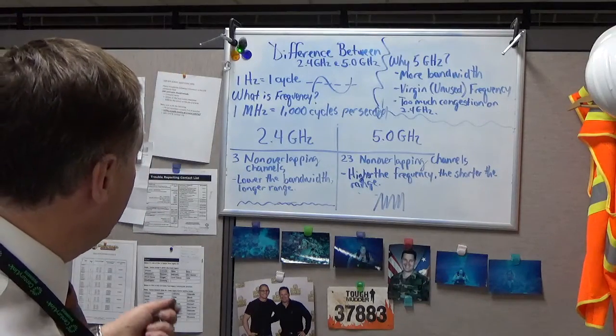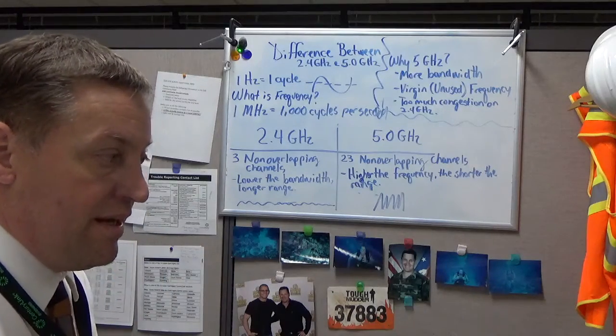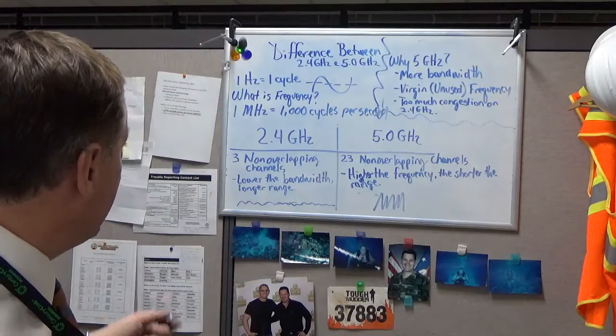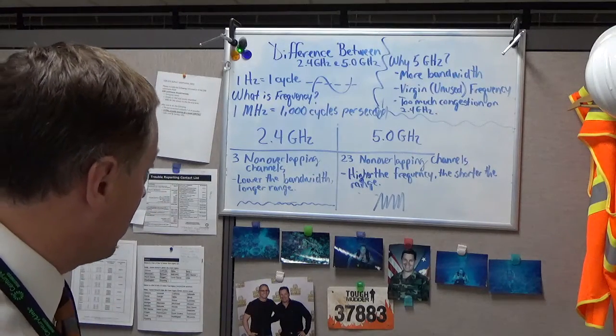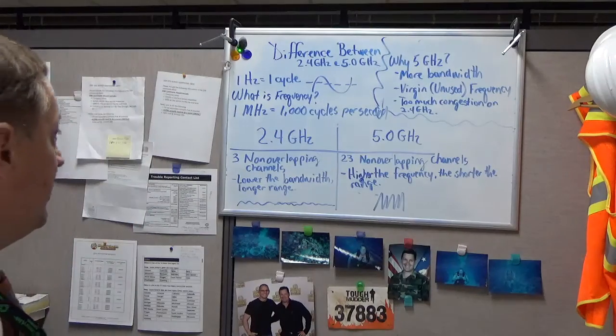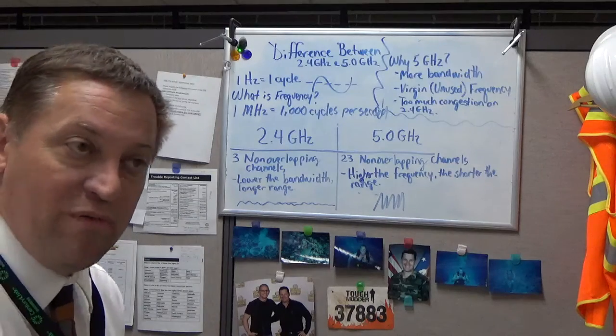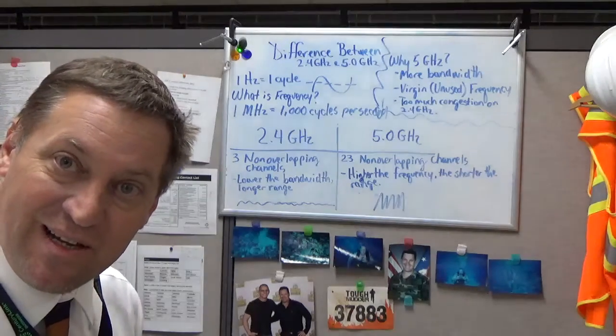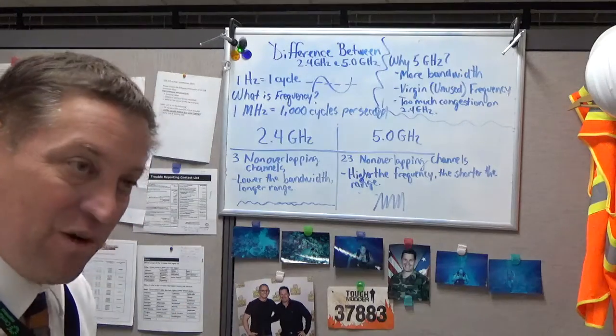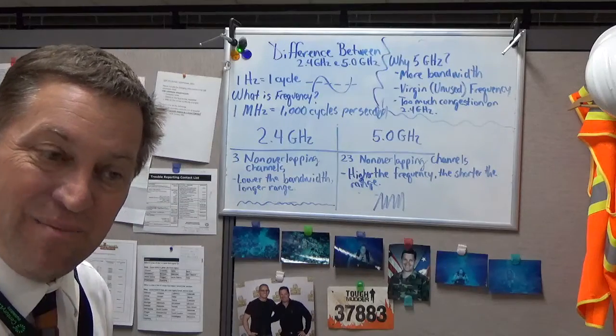Frequency is nothing more than how often something happens within a period of time. In this case, we look at 1 megahertz, which equals 1,000 cycles per second. In the case of 2.4 gigahertz, that would be 2.4 billion cycles per second. And respectively, 5 gigahertz would be 5 billion cycles per second. Just amazing.